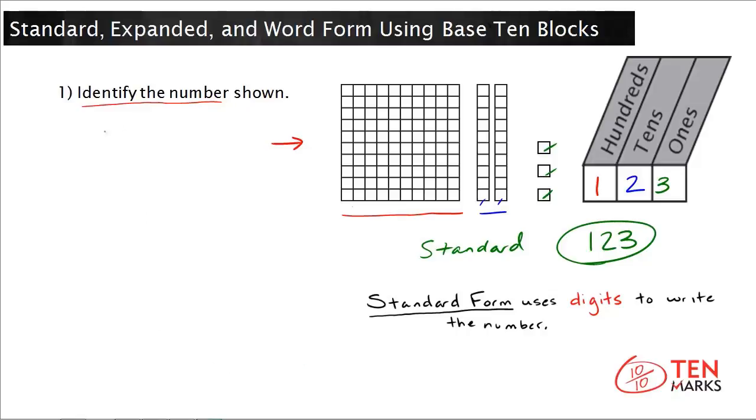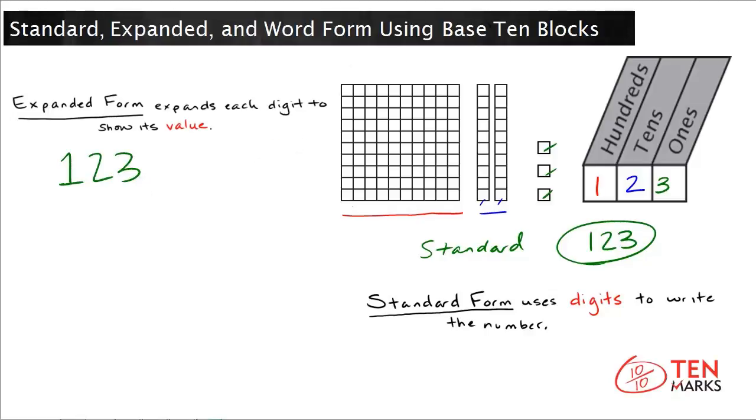Okay, we have a little bit more space now. So we're working with the number 123. If we want to write this in expanded form now, you need to know that expanded form makes use of the value of each digit. So what does that mean? Well, let's look at the number 123.